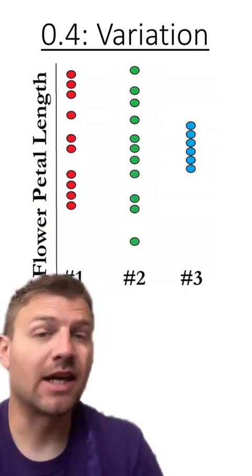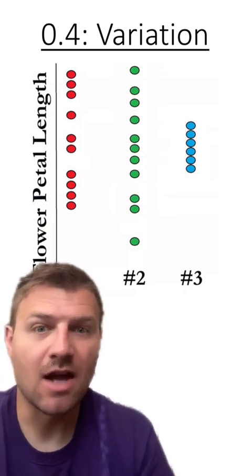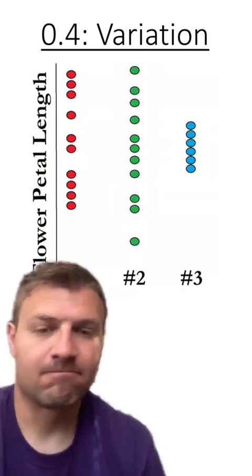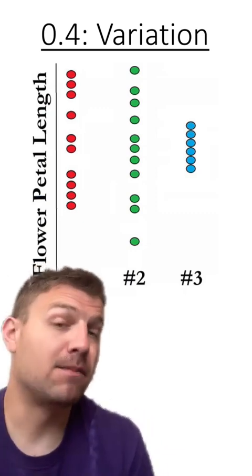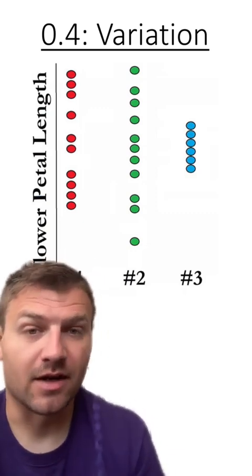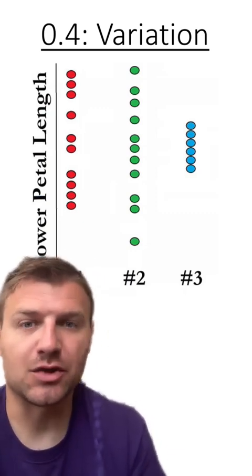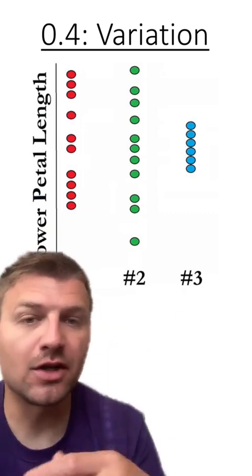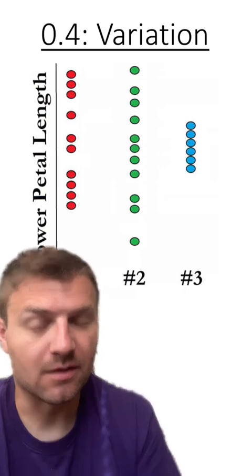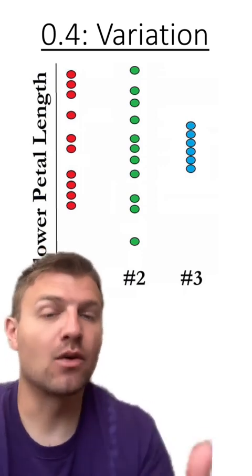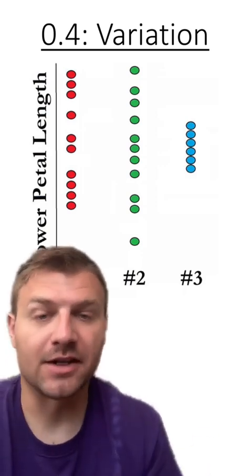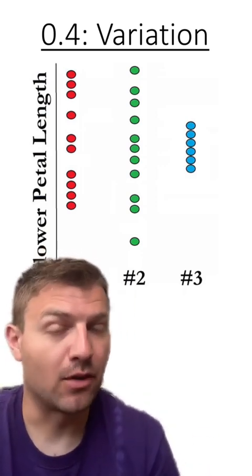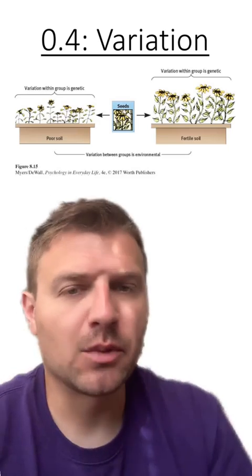Now looking at the between group variation, there's not much difference between each of these different groups. The averages for all three are going to be very similar to each other. However, the within group variation is going to be very different when looking at the data points for each specific group.